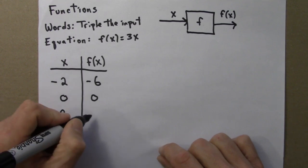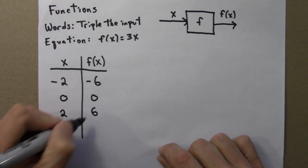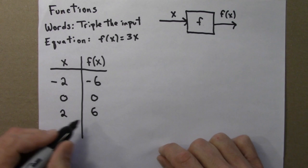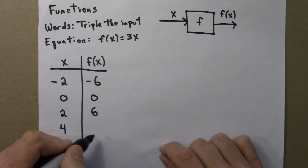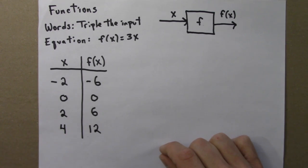An input of 2 gives an output of positive 6, because 2 times 3 is 6. And let's do one more. An input of 4 gives an output of 12, because 4 times 3 is 12.